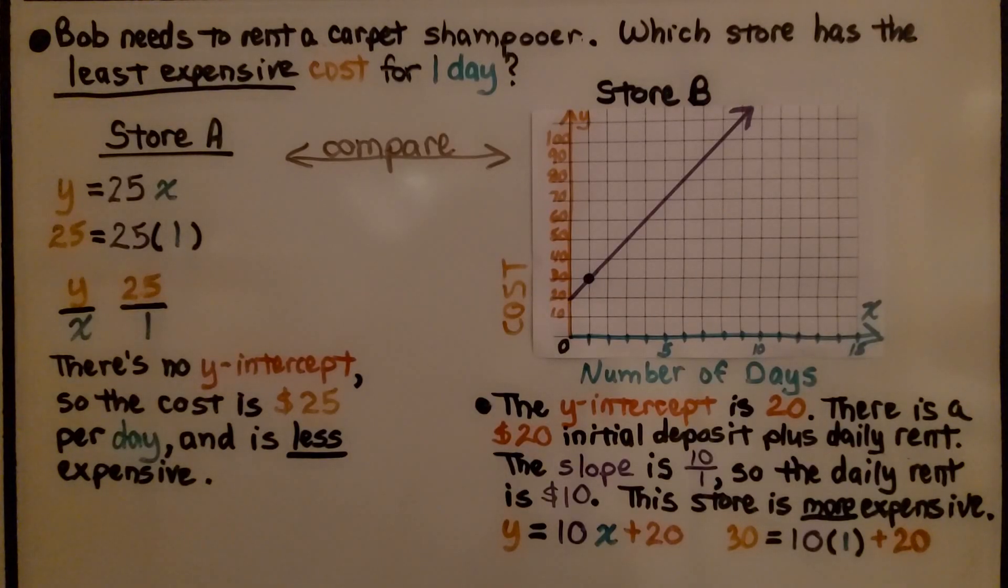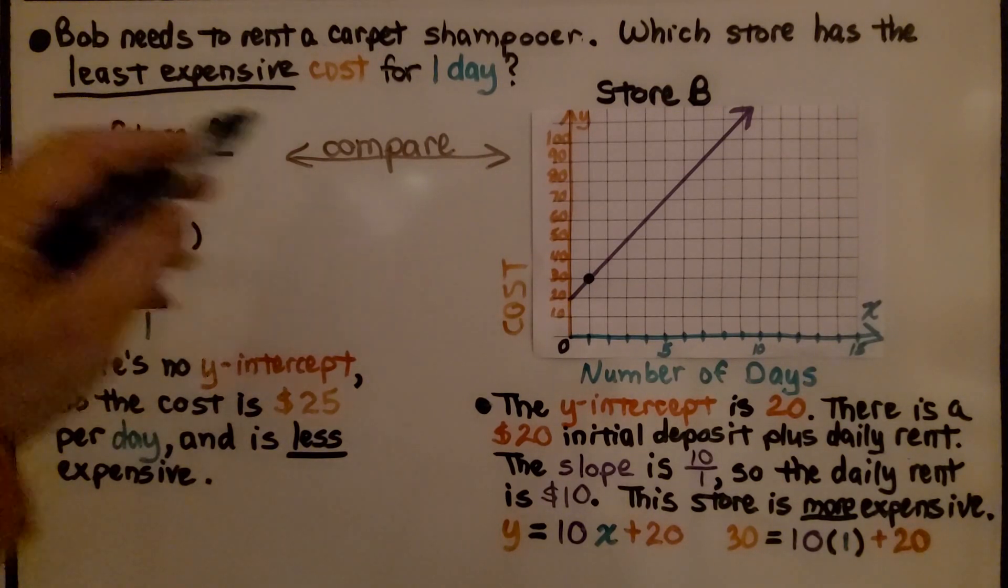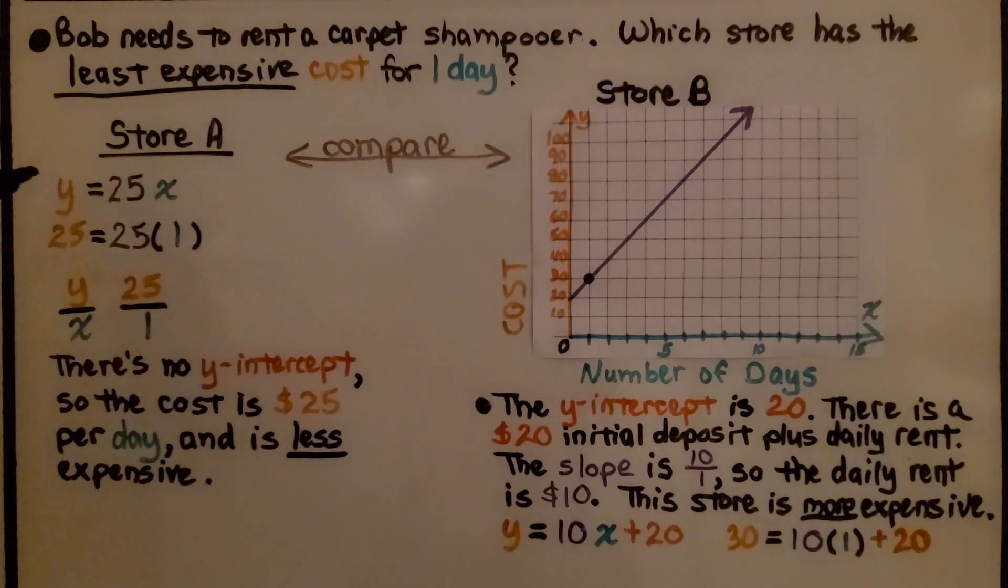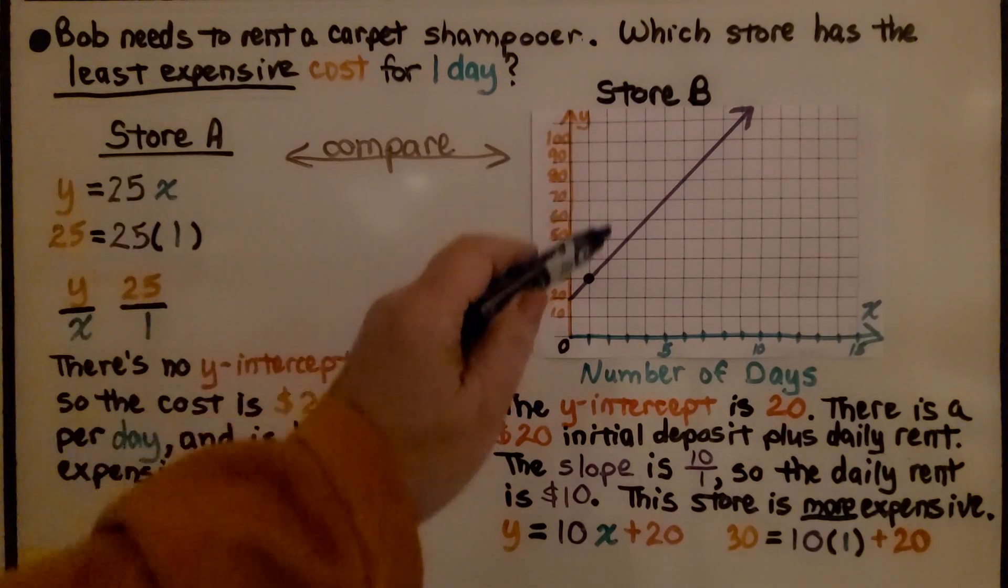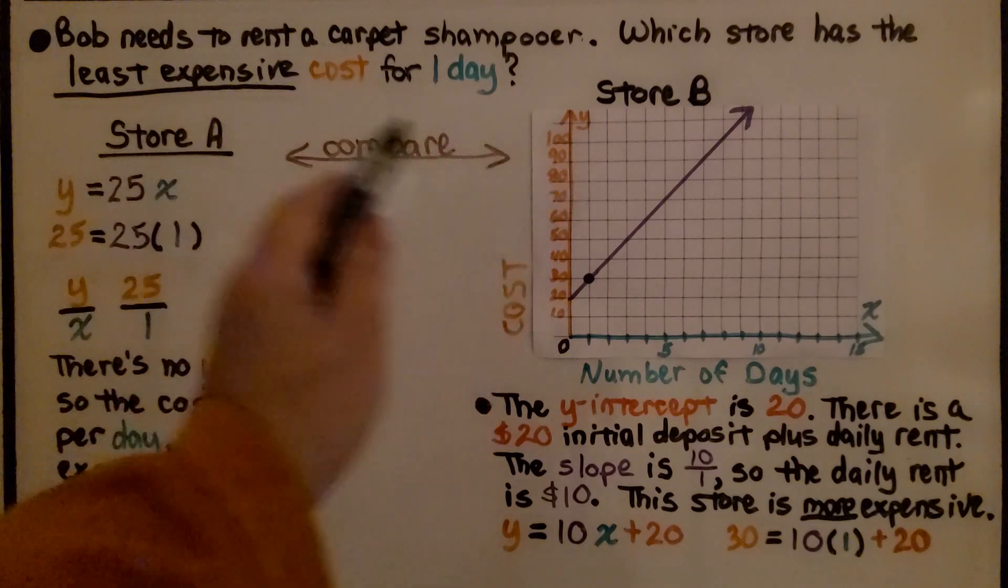Bob needs to rent a carpet shampoo. Which store has the least expensive cost for one day? We have store A and store B. Store A is shown as an equation and store B is shown as a graph. We're going to compare them.